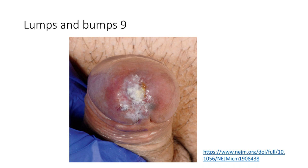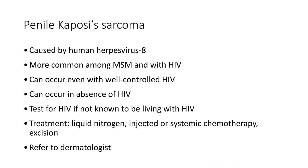Lumps and bumps number nine: an image from the New England Journal — a red bump with some loss of skin surface on the penis — this is Kaposi's sarcoma of the penis. Caused by human herpesvirus 8, it's more common in men who have sex with men and those with HIV, but can occur even with well-controlled HIV and in the absence of HIV. Encourage HIV testing if not known positive. Treatment options include liquid nitrogen, systemic chemotherapy, or excision. Refer to dermatology for biopsy confirmation.